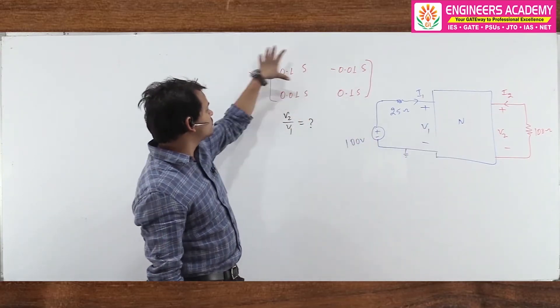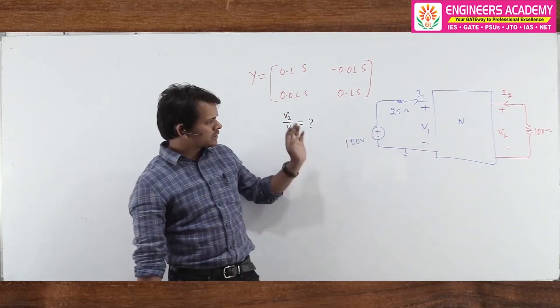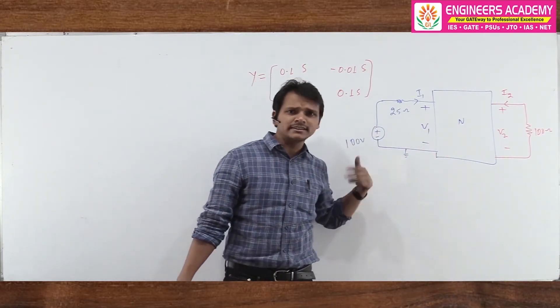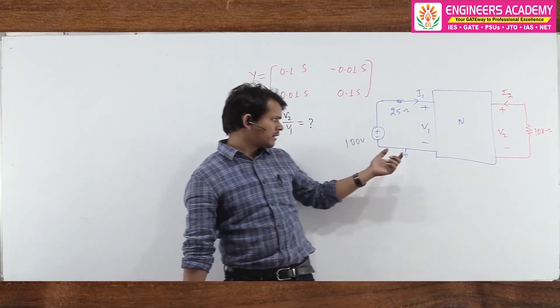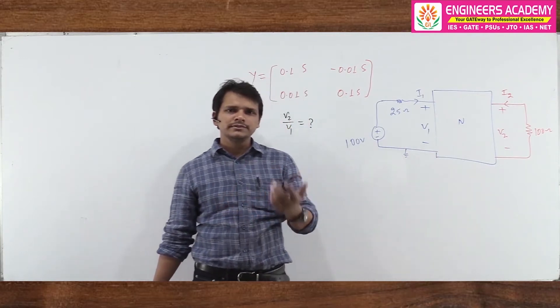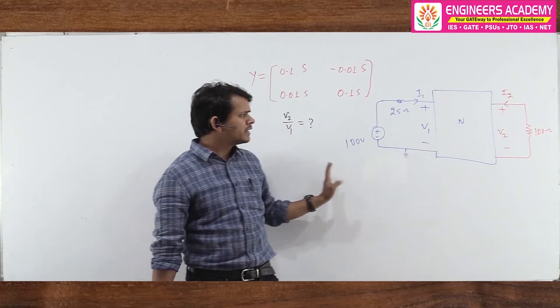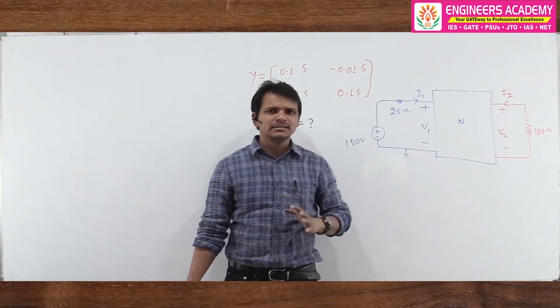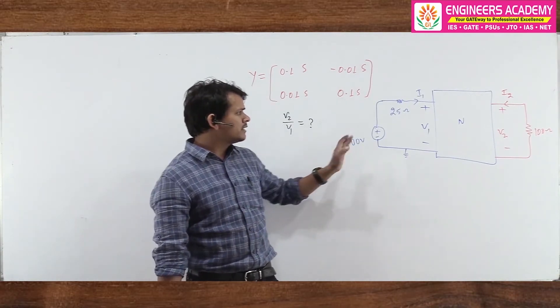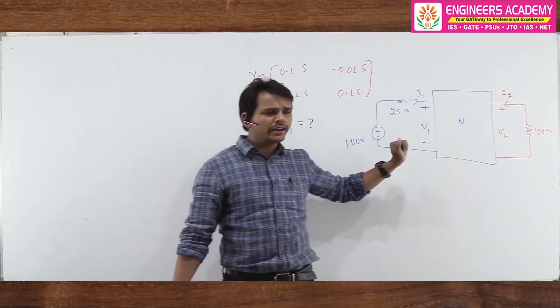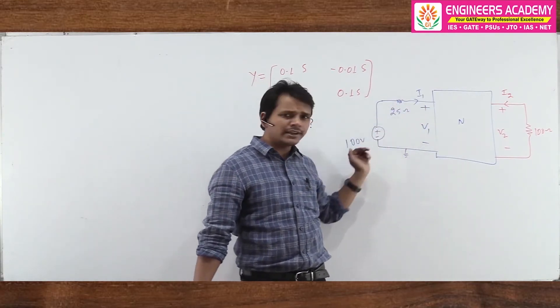One method is to directly hit this. The second method is that when the network is given and Y parameters are defined, we make an equivalent circuit and then solve it. That method is a bit hectic and lengthy. But I always suggest that when Y parameters are given, just try to replace with its mathematical equation and then relate all these things that are given and get the answer. So there are two methods.